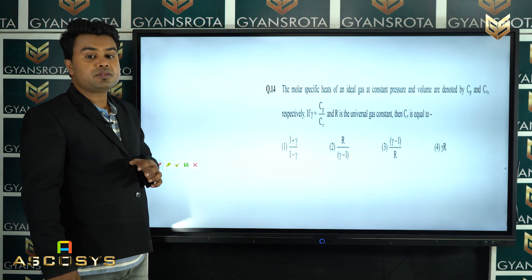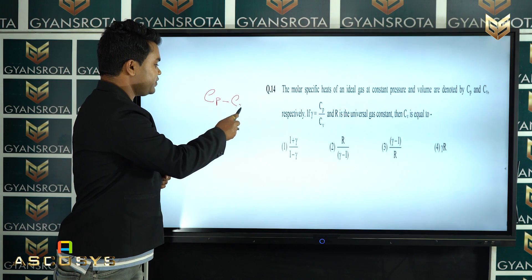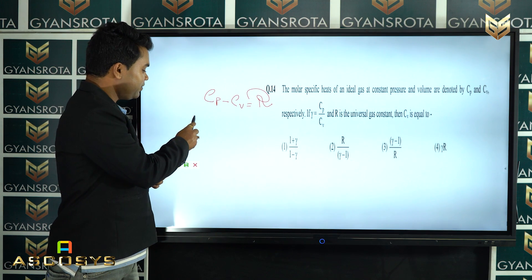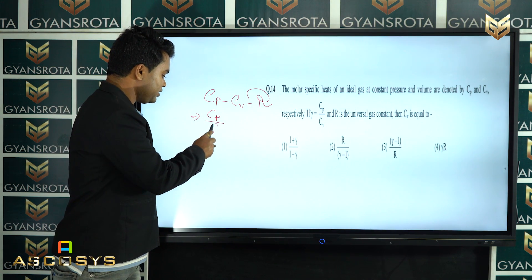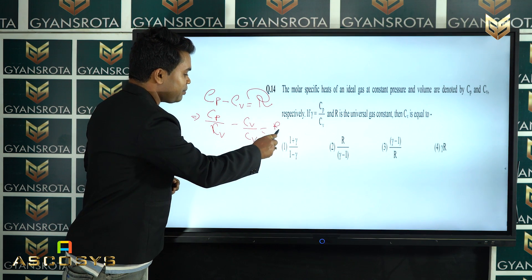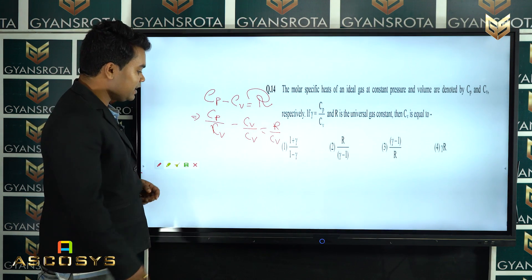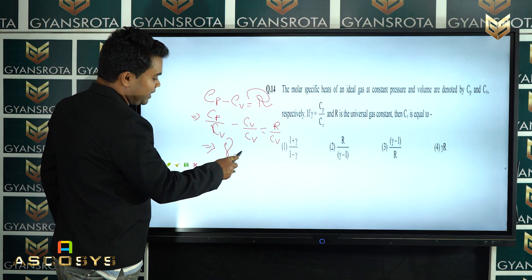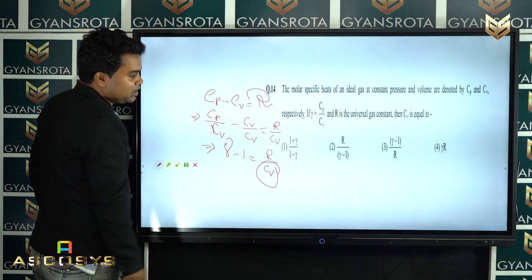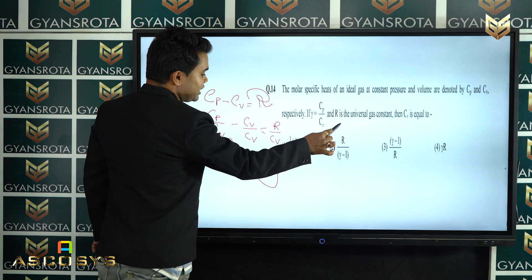We know that Cp minus Cv equals R. If I divide both sides by Cv, I get Cp/Cv minus 1 equals R/Cv, which gives gamma minus 1 equals R/Cv. So Cv equals R divided by (gamma minus 1). This is the correct answer for question 14.